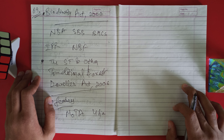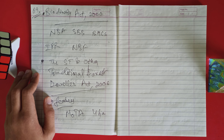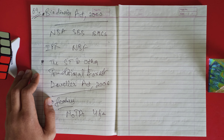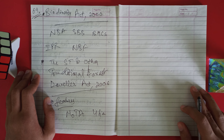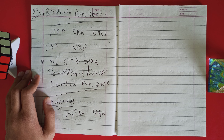The rights conferred under the act shall be heritable but not alienable or transferable. As per the act, the Gram Sabha has been designated as the competent authority for initiating the process of determining the nature and extent of individual or community forest rights.